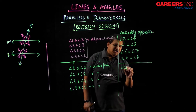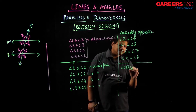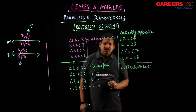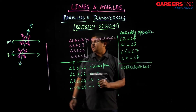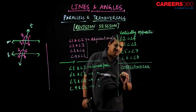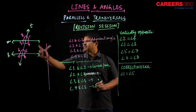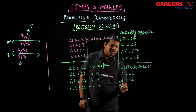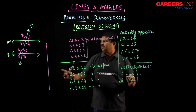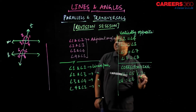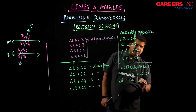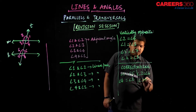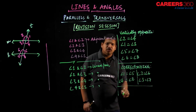Moving forward to corresponding angles. As you can see, the corresponding angle pairs are: angle 1 equals angle 5, angle 4 equals angle 8, angle 2 equals angle 6, and angle 3 equals angle 7. They are all corresponding angles.